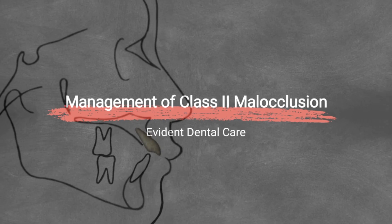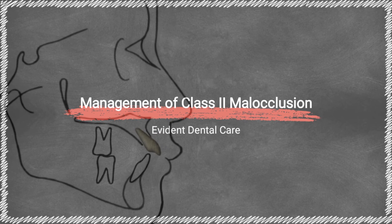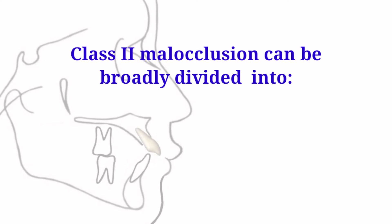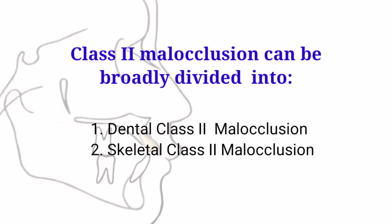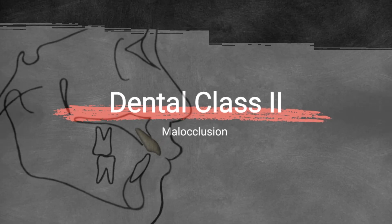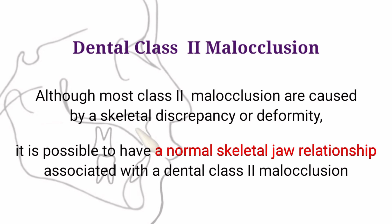Management of Class II Occlusion. Class II occlusion can be broadly divided into Dental and Skeletal Class II Occlusion. Although most Class II occlusions are caused by a skeletal discrepancy or deformity, it is possible to have a normal skeletal jaw relationship associated with a dental Class II occlusion.